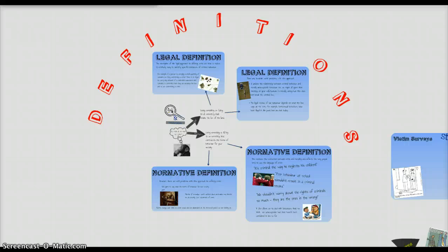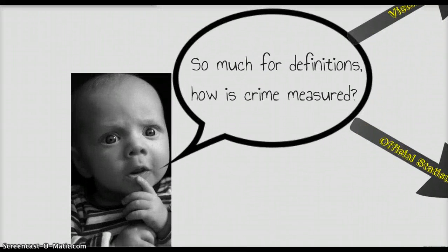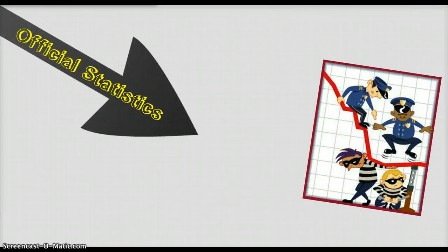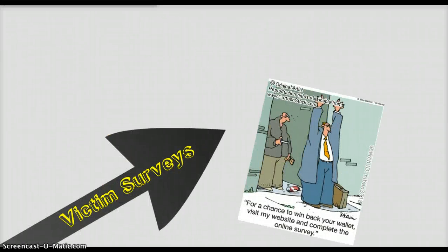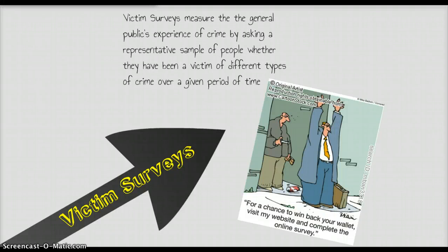So that's the definitions approach — legal and normative. Now, how do we go about measuring crime? Basically, we can go with two approaches. First, there are official statistics, where various government departments responsible for the administration of the law collect data to describe the levels and nature of crimes being committed in a country. Alternatively, we can use a victim survey — an unofficial approach — talking to victims rather than to the people who arrest criminals. Victim surveys measure the general public's experience of crime by asking a representative sample of people whether they've been the victim of different types of crime over a given period.